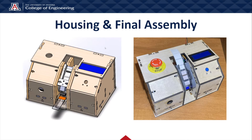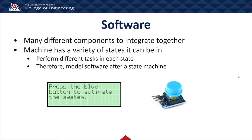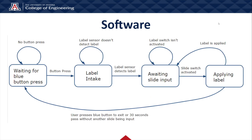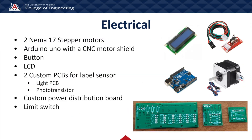As for our housing and final assembly, we chose to make it out of laser-cut plywood as our prototype. As for our software, we had many components integrate together, and our machine has many states in which certain actions need to be performed, so we chose to model our software on a state machine. Our initial state is waiting for the user to press the blue button to start the machine. Once pressed, we intake labels by running our stepper motors. Once the labels are in position, a label sensor detects them, and we wait for the user to push a slide into the machine and activate a limit switch. Once that happens, we apply a label and go back to our initial state.